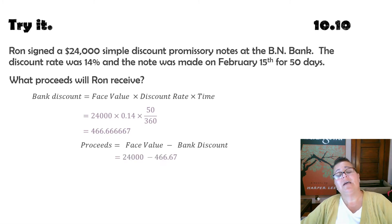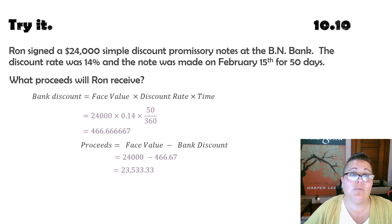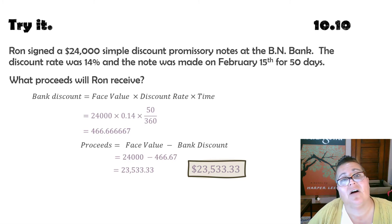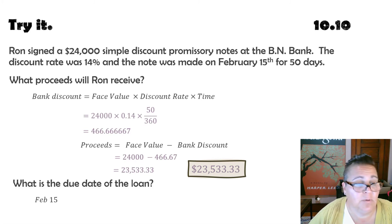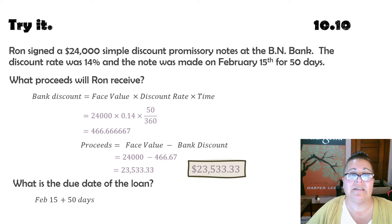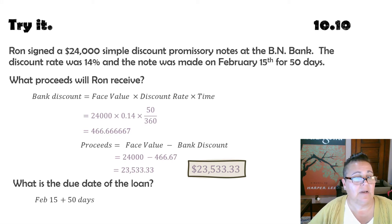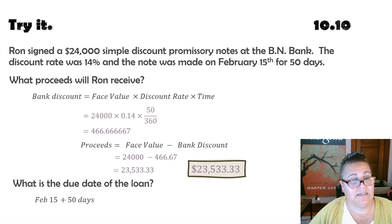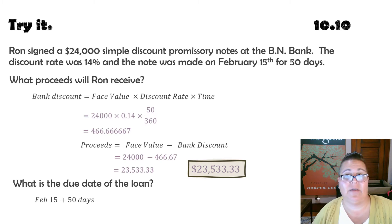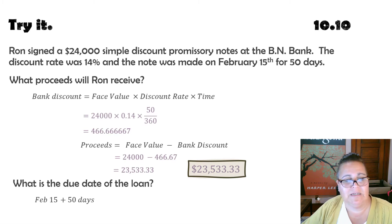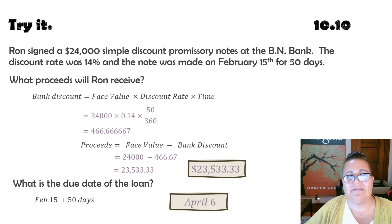So we get $24,000 minus $466.67 equals $23,533.33 — these are the proceeds, the amount Ron gets to walk away with. The due date is February 15th plus 50 days. February 15 plus 50 days gives us February 65th, which doesn't exist. Subtracting 28 days in February gives March 37th, which also doesn't exist. March has 31 days, so subtracting 31 from 37 puts us into the next month: April 6th.